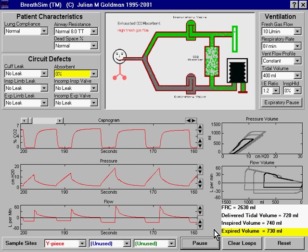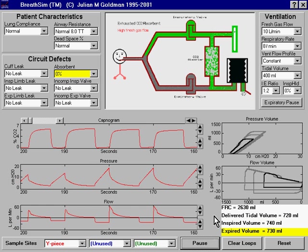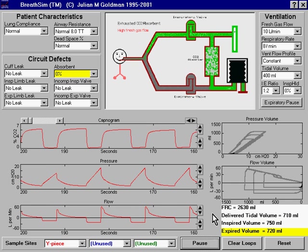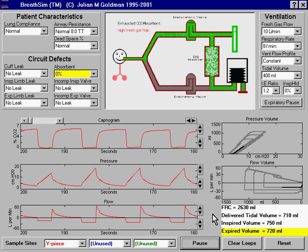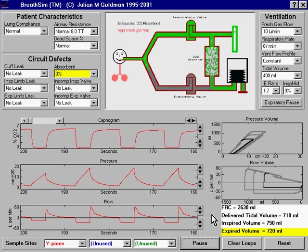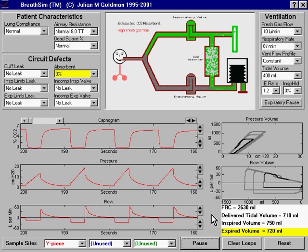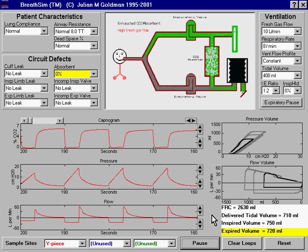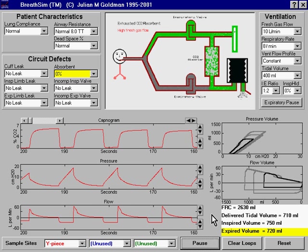So in summary, by increasing fresh gas flow, we can wash CO2 out of the breathing system when the CO2 absorbent is not functioning correctly. And we can correct the potential problem of hyperventilation by altering I to E ratio or by altering the set tidal volume.